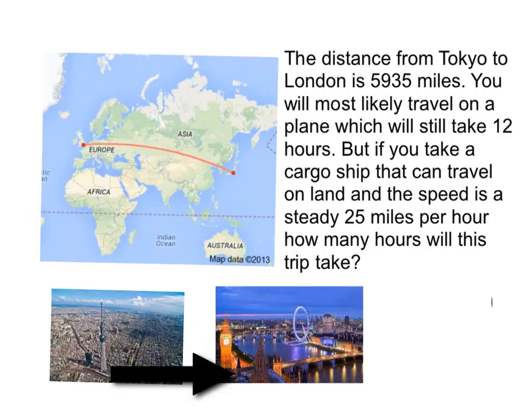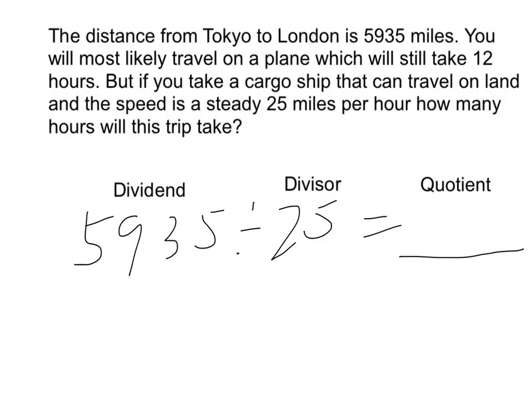Hello, this is Tetsuya, and this is my grouping situation problem. My problem is about the distance from Tokyo to London, which is 5935 miles. You will most likely travel on a plane, which will take 12 hours. But if you take a cargo ship that can travel on land and the speed is a steady 25 miles per hour, how many hours will this trip take?